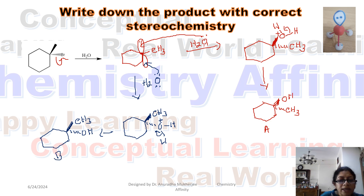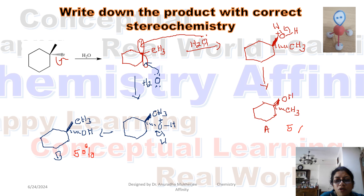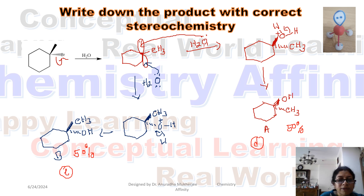Compound A and compound B are enantiomers of each other, and each compound forms 50 percent. If A is dextrorotatory, then B will be levorotatory. This mixture of A plus B, each at 50 percent, is called a racemic mixture.